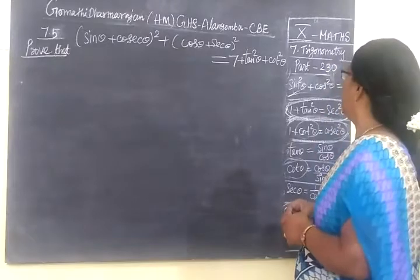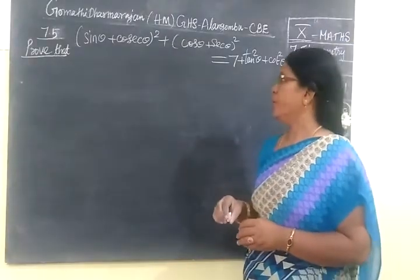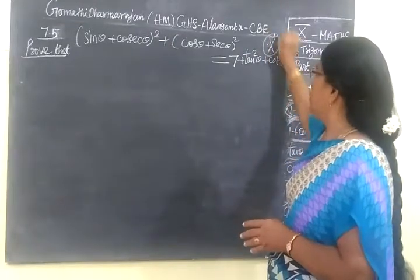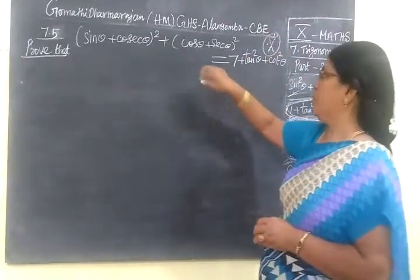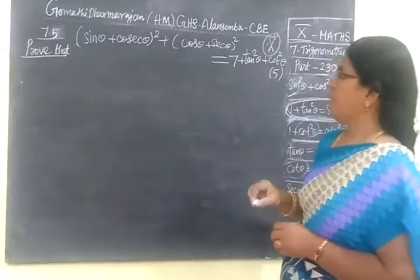Next we are going to do part 230, Excel exam 7.5. This is a very very important question, second important question. In most of the topic examination question papers it is coming, and it comes under 5 marks. Very simple sum only.